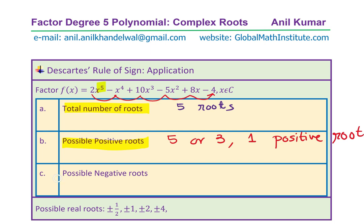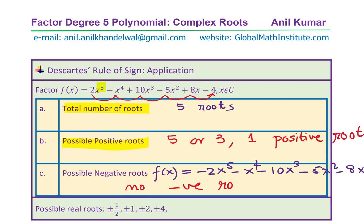Now let's figure out the possible negative roots by computing f(-x). Substituting -x: the odd-degree terms change sign, giving -2x⁵ - x⁴ - 10x³ - 5x² - 8x - 4. All consecutive terms are negative — there is no change in sign for f(-x). Therefore there are no negative roots.